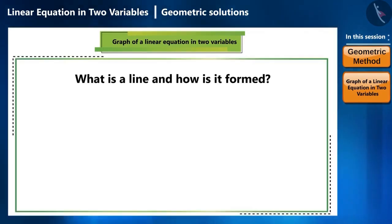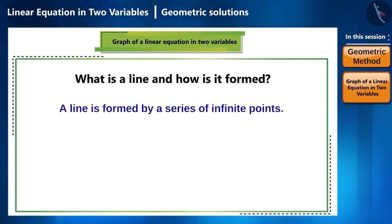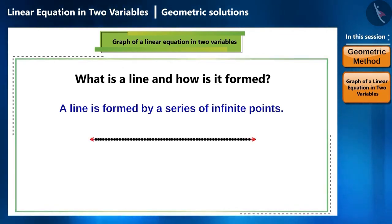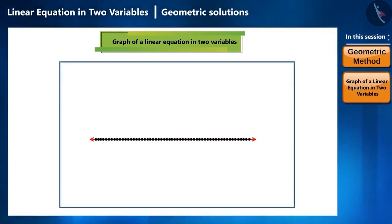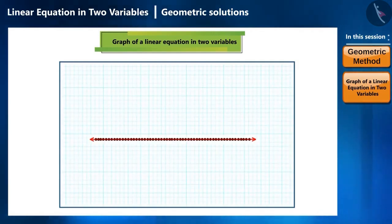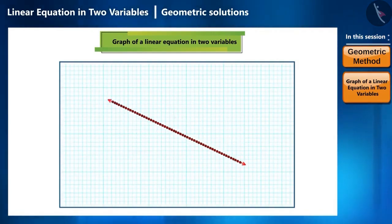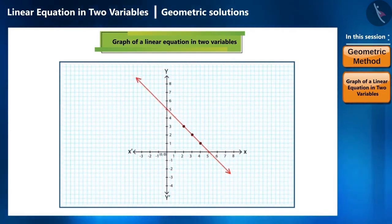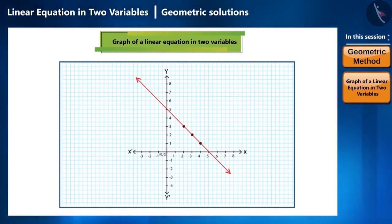Can we say a line is formed by a series of infinite points? Yes. That means, if a line is a set of infinite points, that is, if we consider the graph, then every point in it will be the coordinate point of the x and y axis.